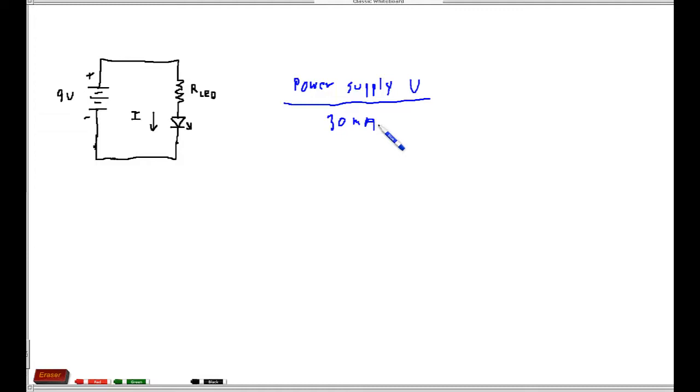Most of these 5 millimeter LEDs have a 30 milliamp max. Now if you do this in this particular case you'll have 9 volts divided by 0.03 amps. Make sure you convert that to amps. If you keep this in milliamps your answer is going to be in kilo ohms and you should come up with 300 ohms.